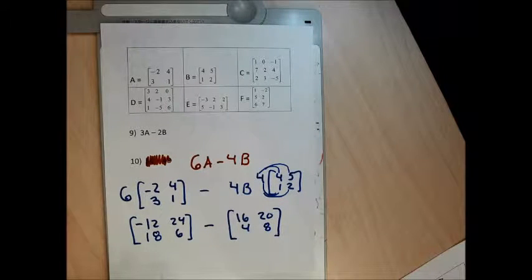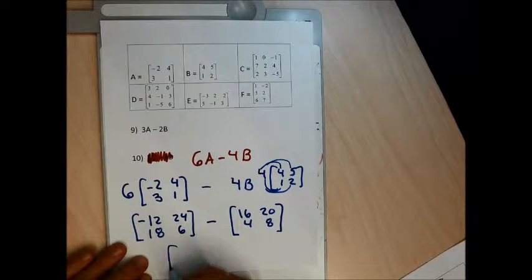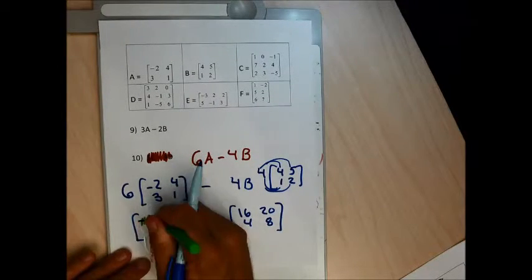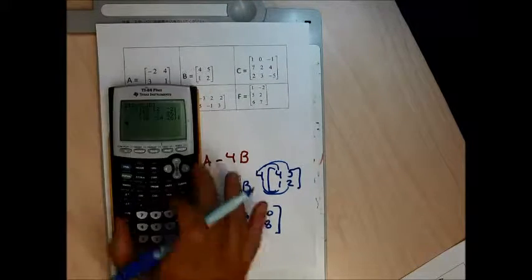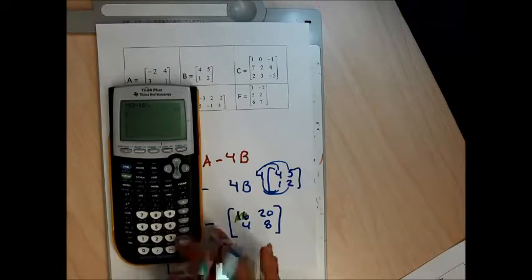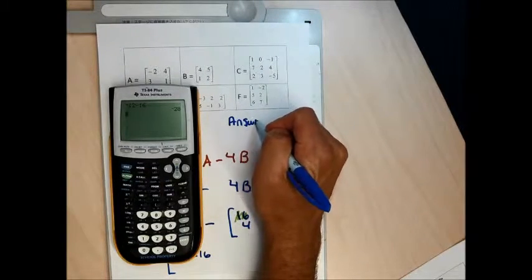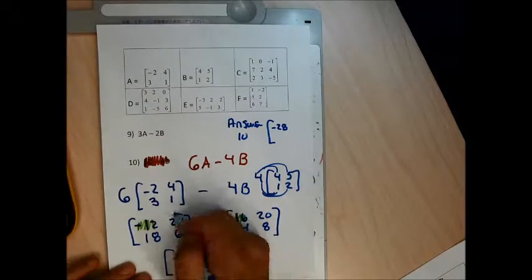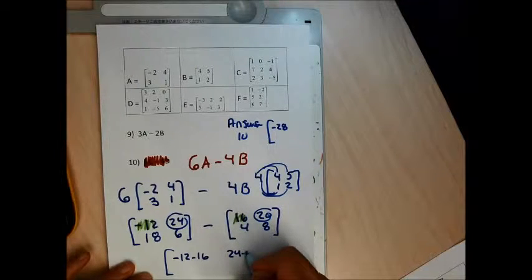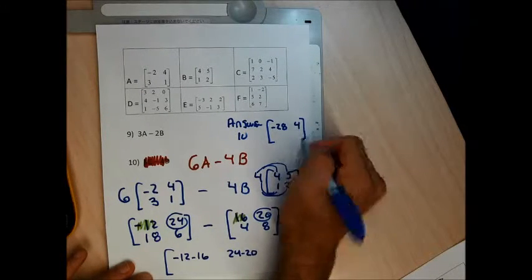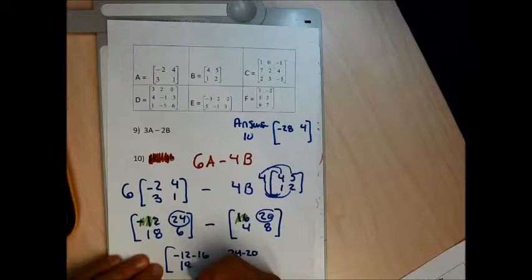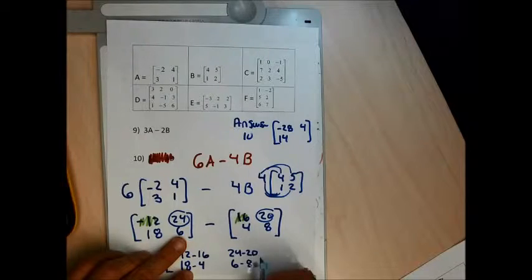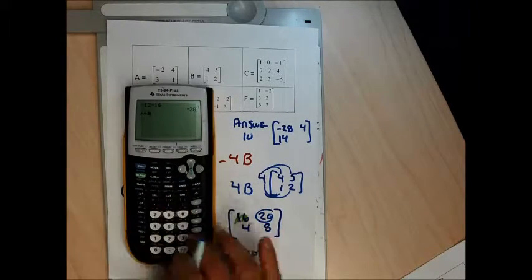I do the multiplication before subtraction. So 4 times matrix B which is 4, 5, 1, 2: 4 times 4 is 16, 4 times 5 is 20, 4 times 1 is 4, and 4 times 2 is 8. Now I'll do my subtraction: negative 12 minus 16 is negative 28 in the upper left; 24 minus 20 is 4; 18 minus 4 is 14; and 6 minus 8 is negative 2.